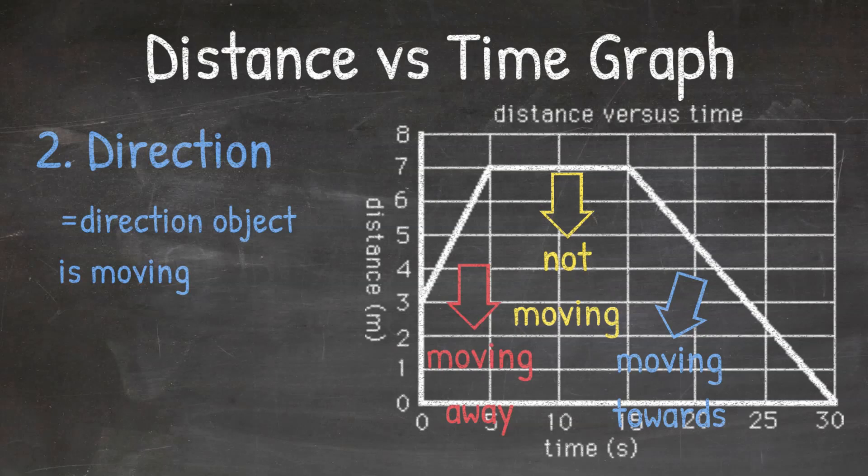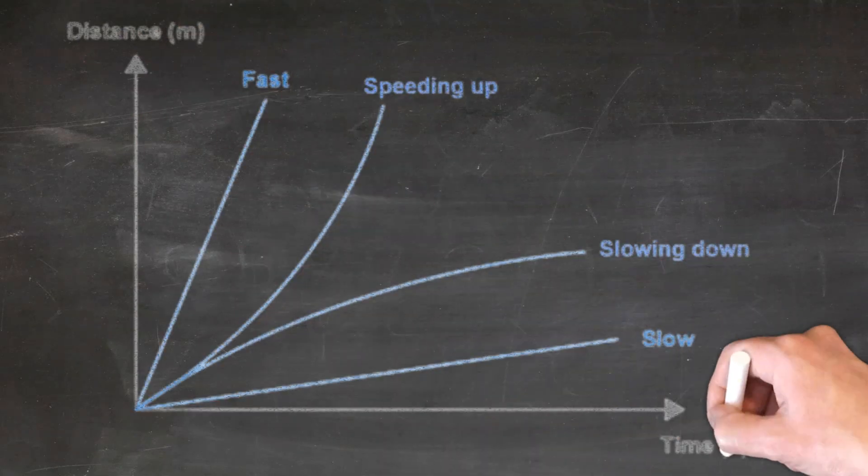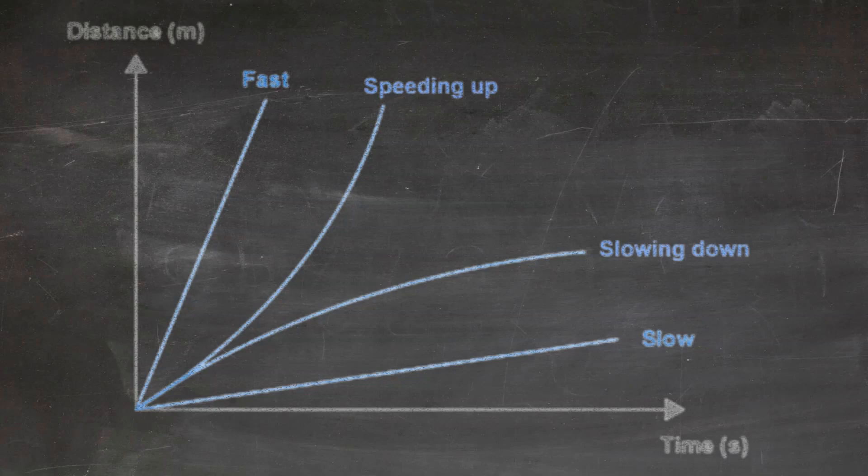So now let's look at a few examples of different graphs that we might see. In this graph, we can see four different lines, again reminding us that the shape of the line and direction of the line can help us understand what's going on.